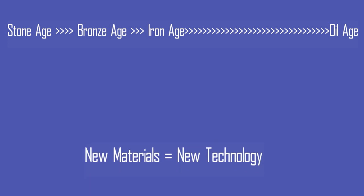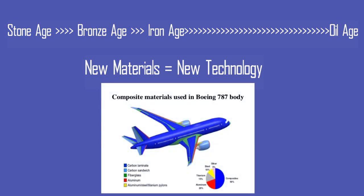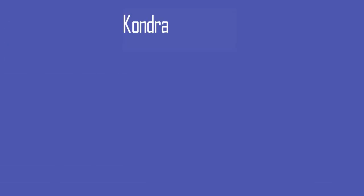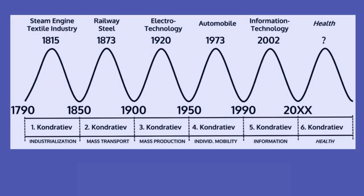Eventually we maxed out the material space usage, and it was the limitation of material properties that stopped the exponential growth of computing power. We can also observe how the arrival of composite materials has completely revolutionized the aircraft industry. This phenomenon is captured well by the model called the Kondratiev wave. According to this model, the discovery of a new material or development of new technology brings alternating intervals of high sectoral growth followed by slow sectoral growth, with wave periods ranging from 40 to 60 years. Based on the theory, we are currently in the cycle of information technology that started from 1990.